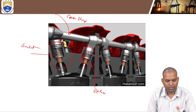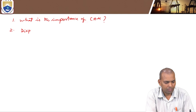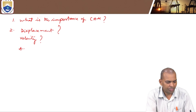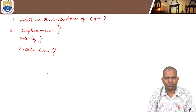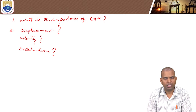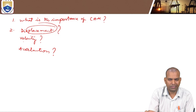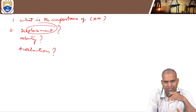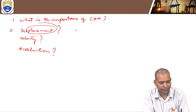Now, what are certain key terms? What is displacement? The distance travelled by the follower during the outstroke or return stroke of the CAM rotation is known as displacement — the total distance travelled. There is one more term here: the maximum distance the follower moves for a particular rotation of the CAM is known as the lift or stroke of the follower.